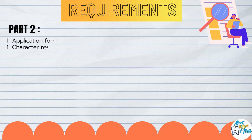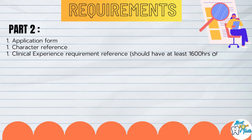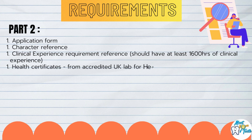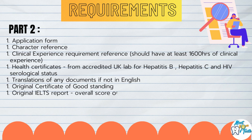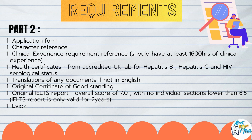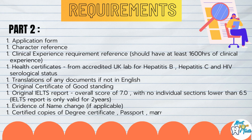For Part 2, the supporting documents include: an application form, a character reference, a clinical experience reference showing at least 1,600 hours of clinical experience, health certificates showing serological status for Hepatitis B, C, and HIV, translations of any documents not in English, an original good standing certificate, and an original IELTS report with an overall score of 7 and no individual section lower than 6.5. Note that the IELTS report is only valid for two years, so plan accordingly. Also required: evidence of name change if applicable, certified copies of your degree certificate and passport, and a diversity monitoring form.